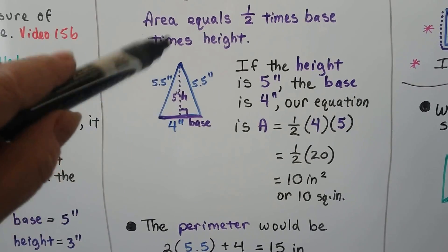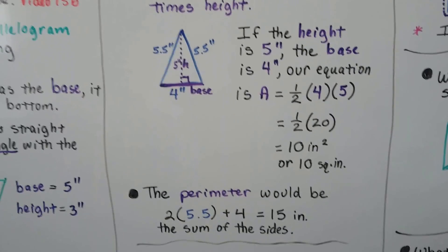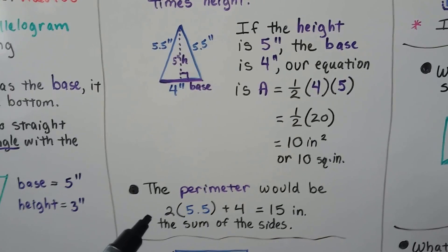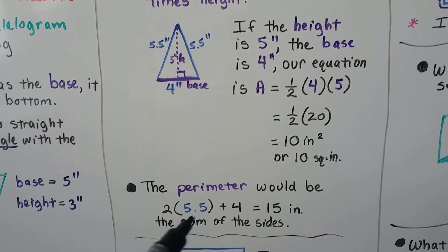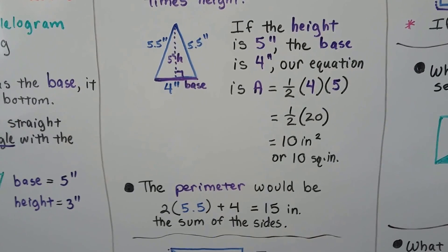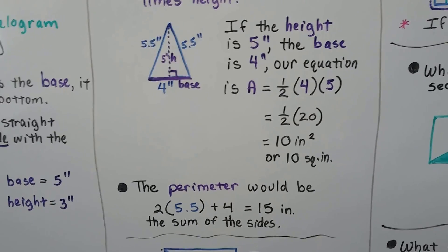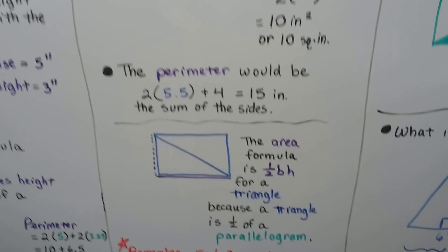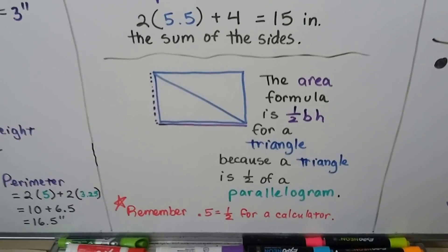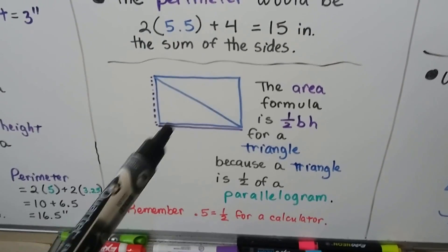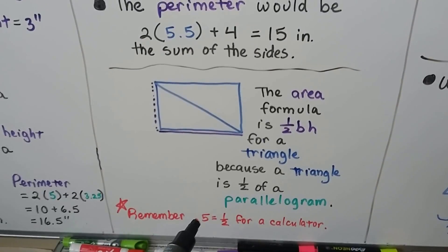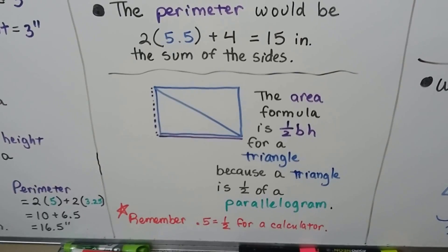See how we ignored the slant height? That would be okay for perimeter. The perimeter would be 2 times 5.5 plus that 4. That would give us 15 inches for the sum of all the sides. The area formula is half base height for a triangle because a triangle is half a parallelogram. Just remember to use 0.5 on the calculator for that half.